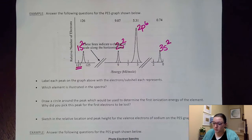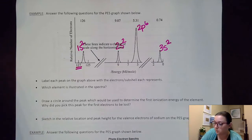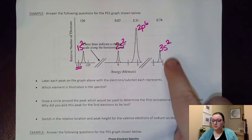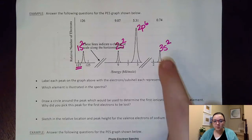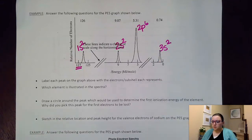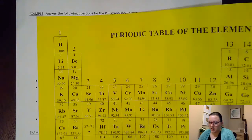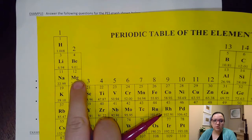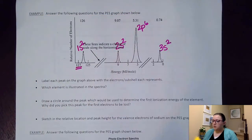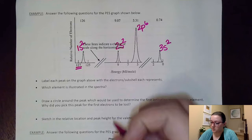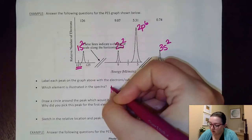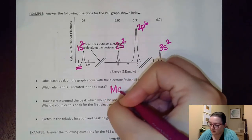Next it asks which element is illustrated in the spectra. Based on the last thing I wrote down — 3s2 — I can see that 3s2 would end with magnesium. So this particular spectra must be representative of magnesium.